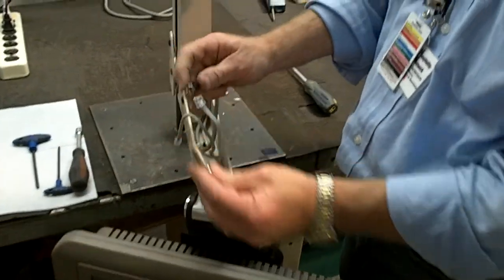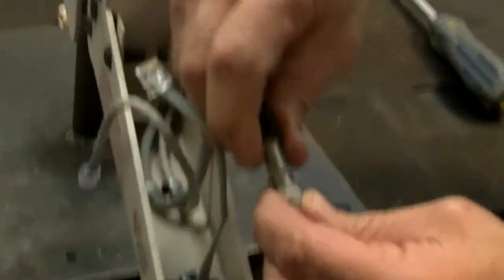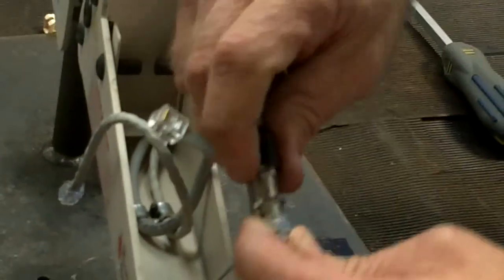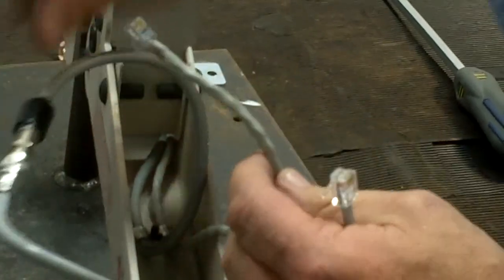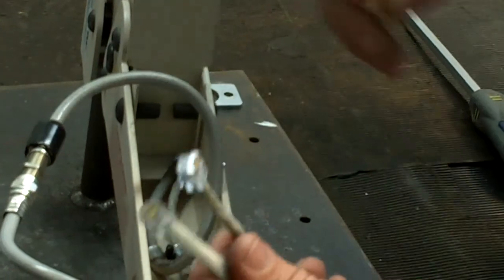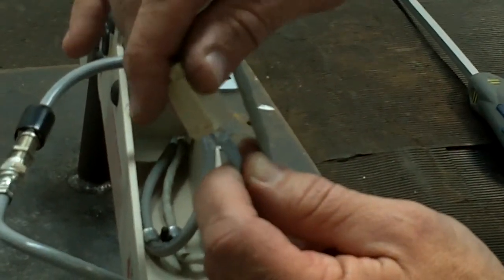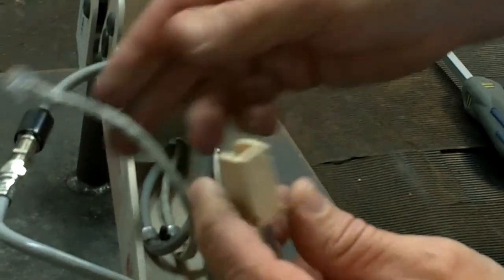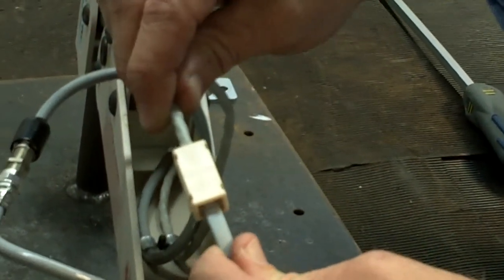It's time now to make our connections. The F connector threads on like so. You can do that finger tight. And if you're using a system that requires the data connection, you'll need a data coupler. If not, you can just tuck those in. In this case, we'll put a coupler on. You'll hear that snap. And from the other side, just pull to make sure the connections are tight.